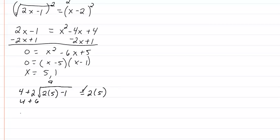Let's check our next one. So we have 4 plus 2 times the square root of 2 times 1 minus 1. And does it equal 2 times 1? Well, 2 minus 1 is 1 and the square root of 1 is 1. So we have 4 plus 2. Does that equal 2? The answer is no, it doesn't check. So x is not a solution. And we get x is equal to 5.